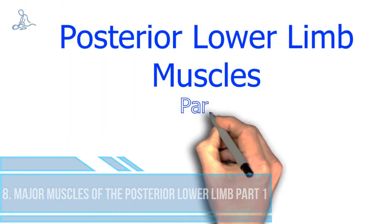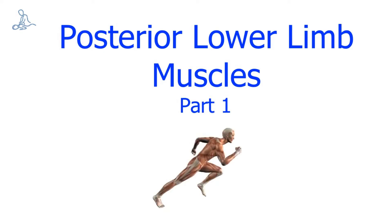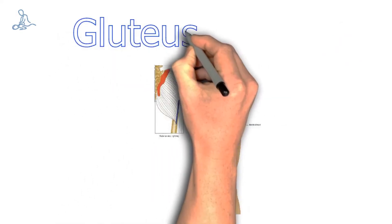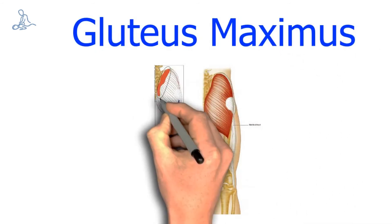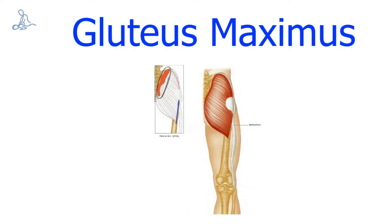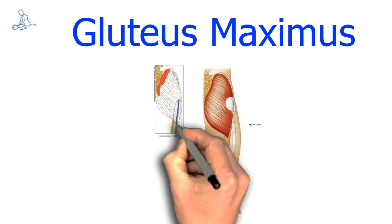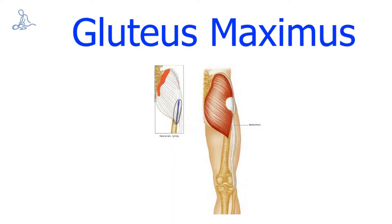Posterior Lower Limb Muscles Part 1. Gluteus Maximus. The origin of the gluteus maximus is the posterior ilium, sacrum, and coccyx. The insertion of the gluteus maximus is the iliotibial band (ITB) and gluteal tuberosity of the femur. The action of the gluteus maximus is to extend and lateral rotate the thigh.